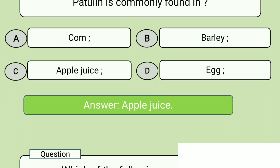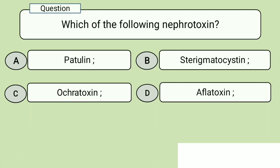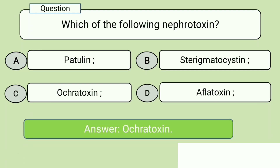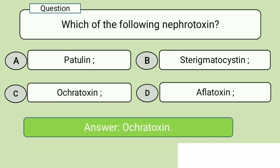Question 2. Which of the following is a nephrotoxin? A. Patulin, B. Sterigmatocystin, C. Ochratoxin, D. Aflatoxin. Answer: Ochratoxin.